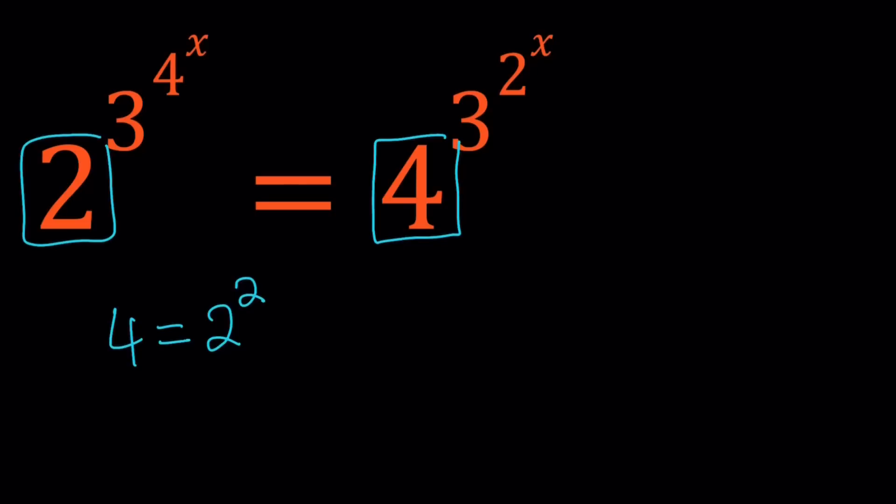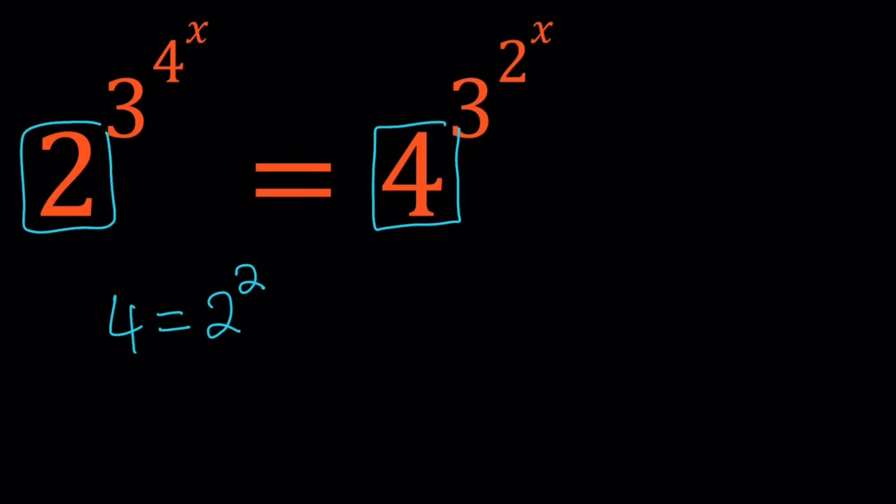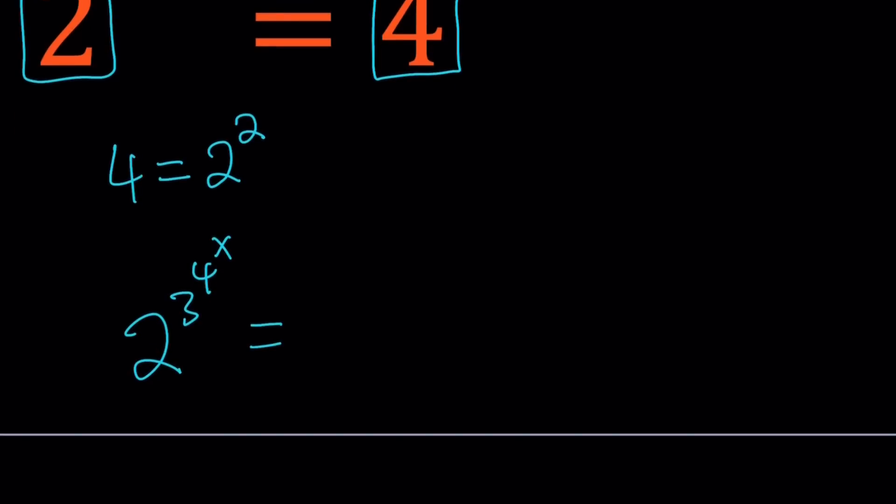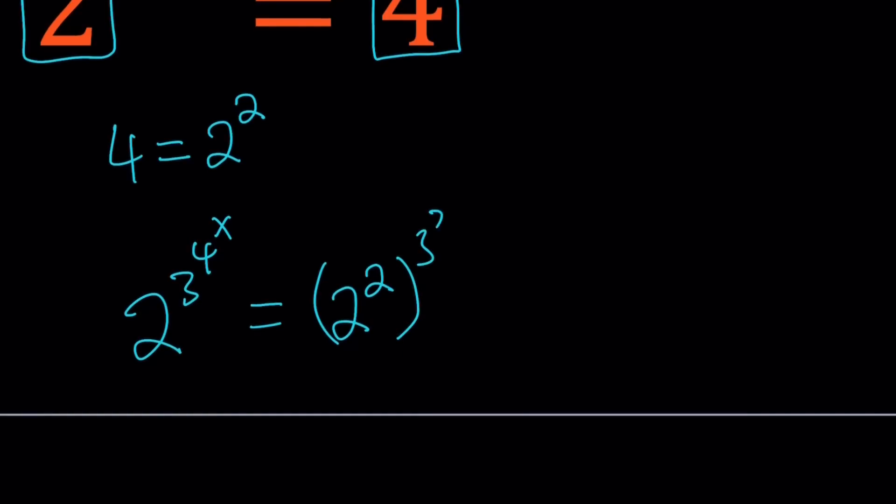So let's replace 4 with 2 to the second so that gives us 2^(3^(4^x)) = (2^2)^(3^(2^x)).